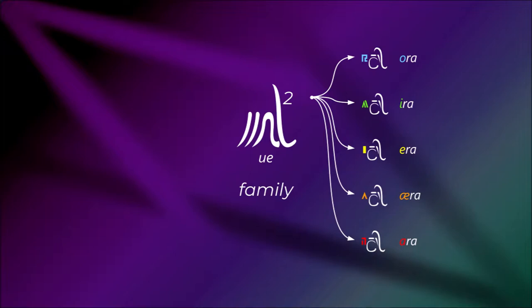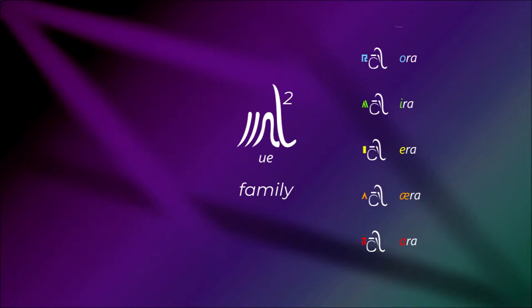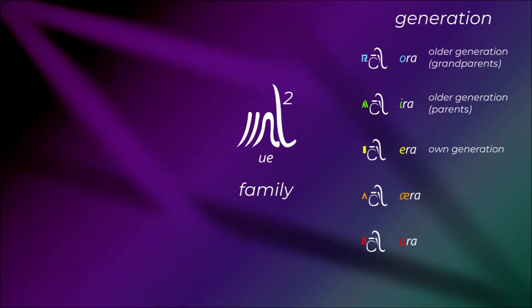With UE, the addition of a qualifier makes the root word refer to a generation. The middle qualifier, era, refers to the same generation — one's own generation. Ira is the older generation, the generation of one's parents. Ora refers to two generations up, the generation of grandparents. The remaining qualifiers mean the same but for younger generations: aira refers to the generation of children, and ara refers to two generations down, grandchildren.